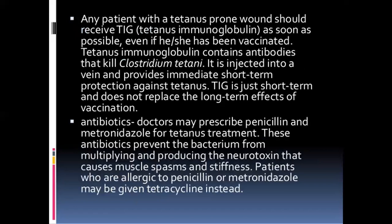Any patient with a tetanus-prone wound should receive TIG — tetanus immunoglobulin — as soon as possible, even if he or she has been vaccinated. Tetanus immunoglobulin contains antibodies that kill Clostridium tetani. It is injected into a vein and provides immediate short-term protection against tetanus. TIG is just short-term and does not replace the long-term effect of vaccination.